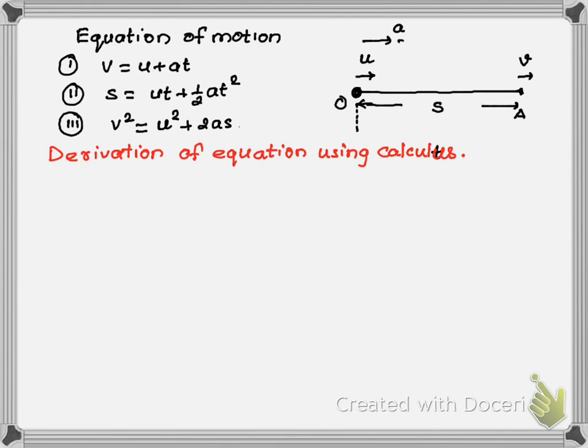In the first equation there is V is equal to U plus AT. We know that A is equal to delta V upon delta T, which is V2 minus V1 upon T2 minus T1. If I am going to write this in differentiation format, A is equal to dv by dt.